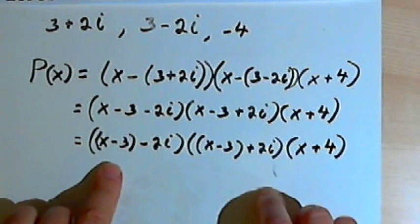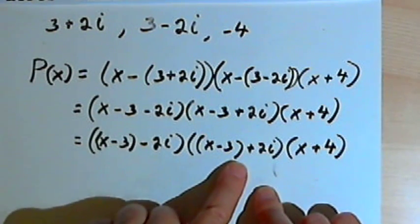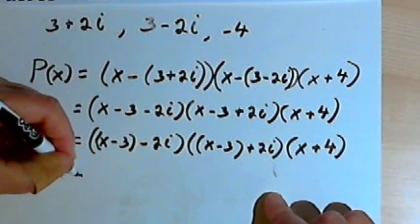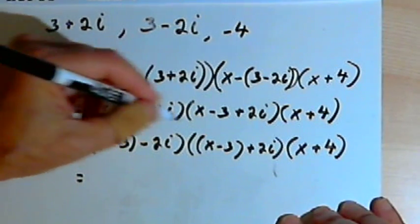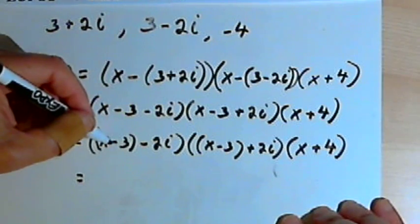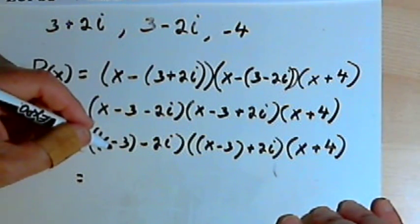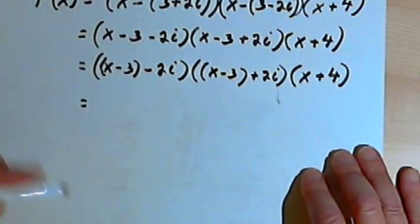Now I want to multiply these first two factors together. So what I'm going to do, in a sense, is FOIL them. If I take the first times the first, that's x minus 3 times x minus 3, which basically is x minus 3 squared.